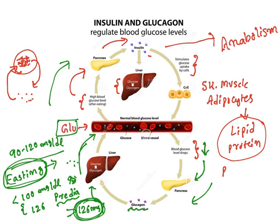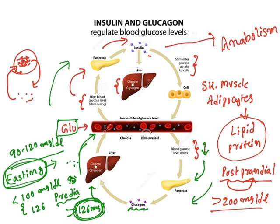The other one is postprandial. Prandial means food state; postprandial means after having food. When we take food, naturally glucose level increases because the carbohydrates release glucose. After taking food, if you check the random blood glucose levels and it is more than 200 mg per deciliter, again this is considered as diabetes. So there are two different tests: fasting — if it is more than 126 mg per deciliter it is considered as diabetes — and after taking food, the random test, if it is greater than 200 it is considered as diabetes.